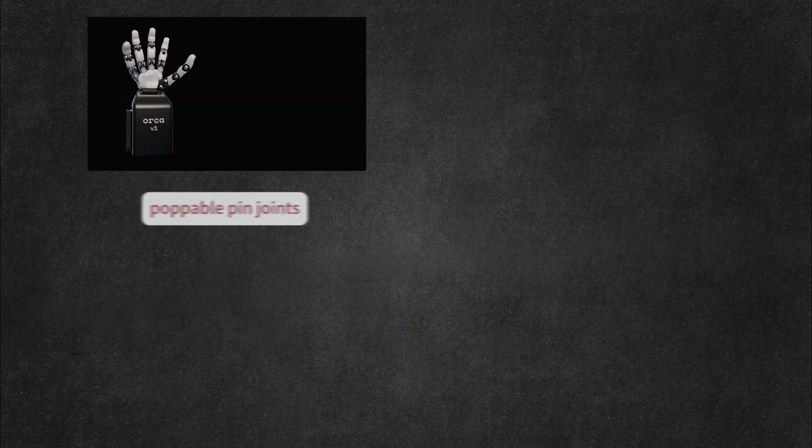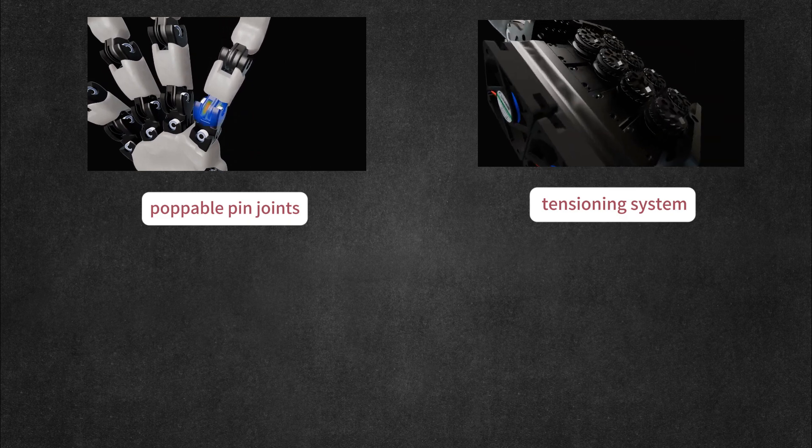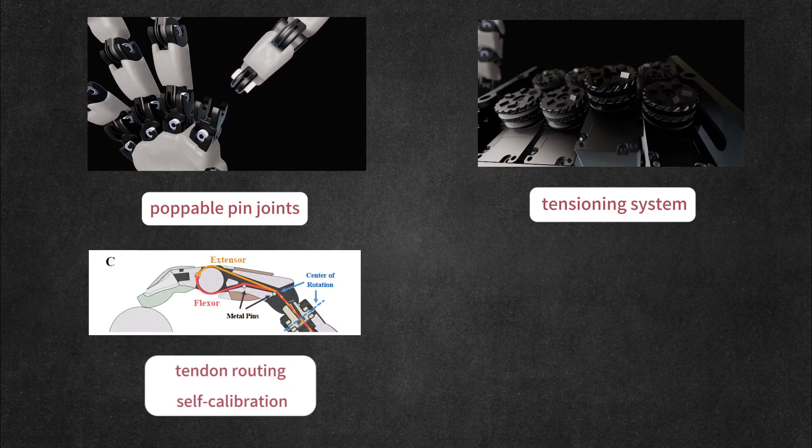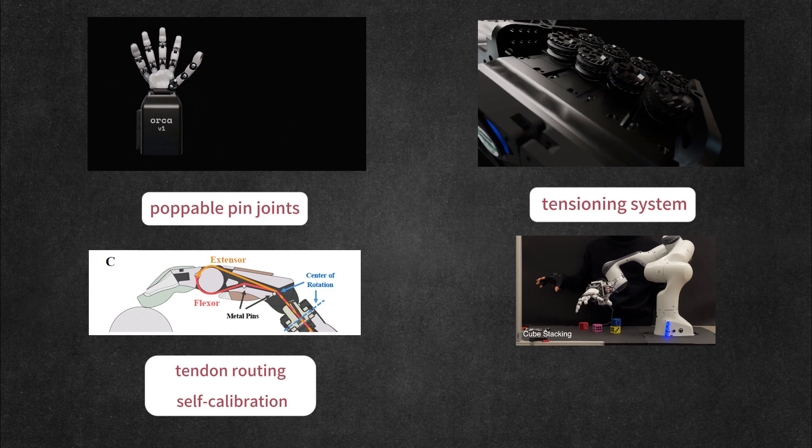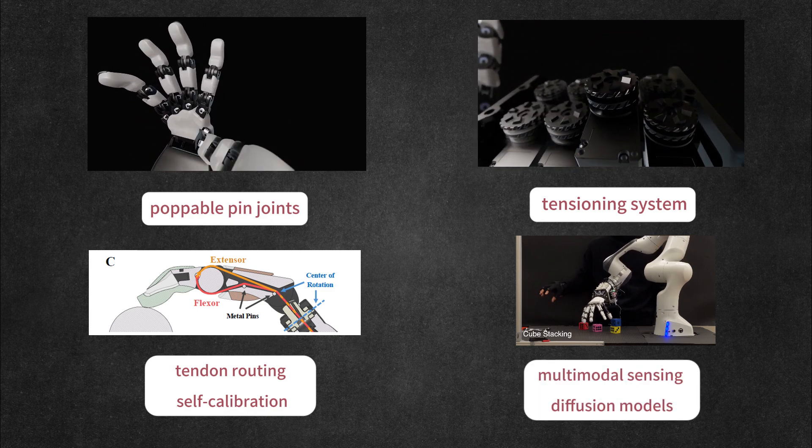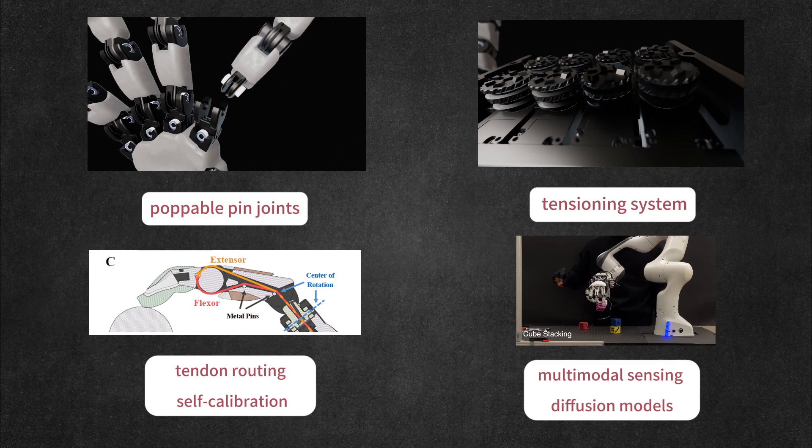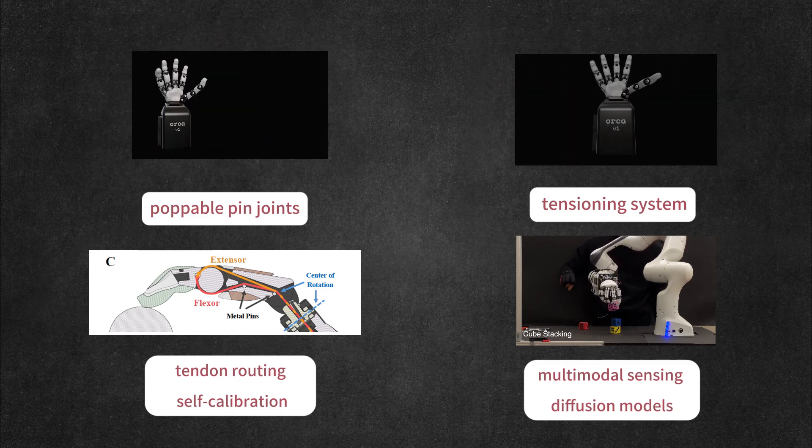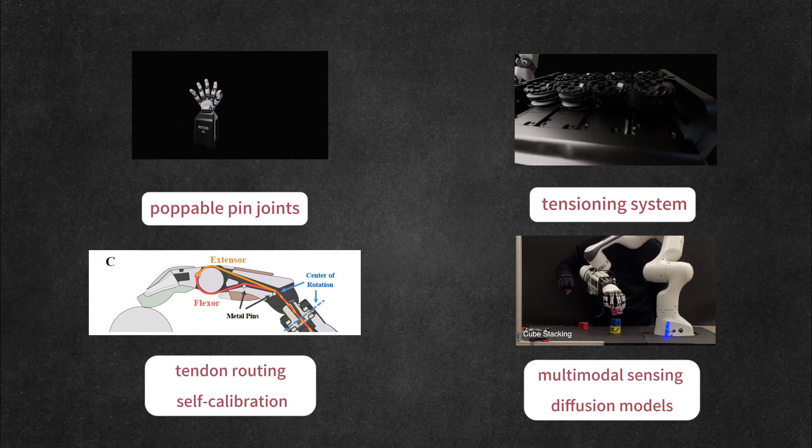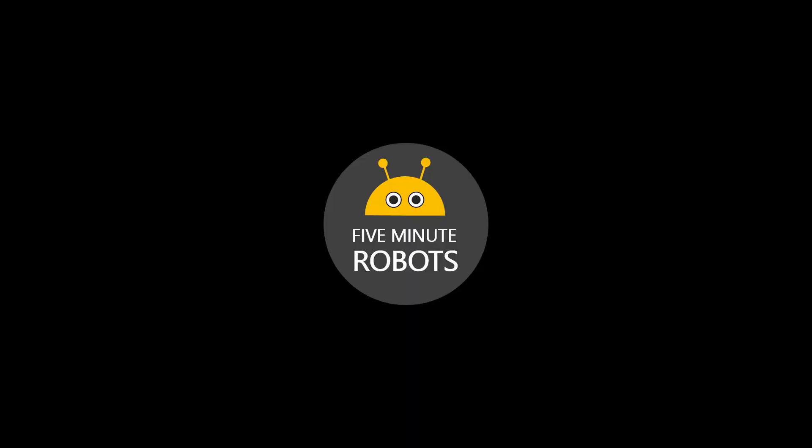To summarize, poppable pin joints make Orca hand more durable. The tensioning system greatly improves maintainability. Tendon routing and self-calibration reduce control complexity and boost accuracy, enabling zero-shot reinforcement learning transfer. And imitation learning, powered by multimodal sensing and diffusion models, ensures robust and human-like operation. If you enjoyed this, don't forget to like and subscribe, so you won't miss more amazing robotics.